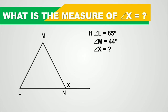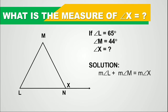So we have the measure of angle L plus the measure of angle M equals the measure of angle X. These are our interior angles — angle L and angle M. We will just add the measures of these two interior angles to determine the measure of the exterior angle X.